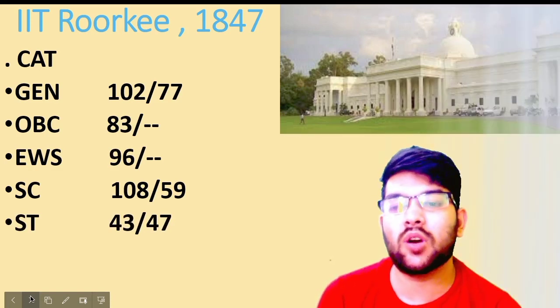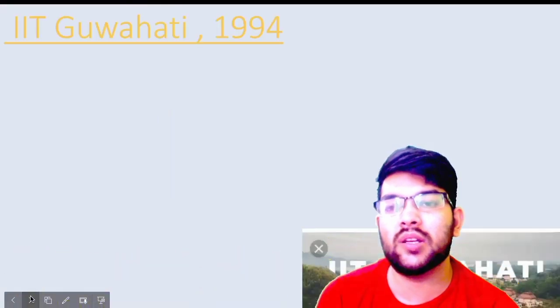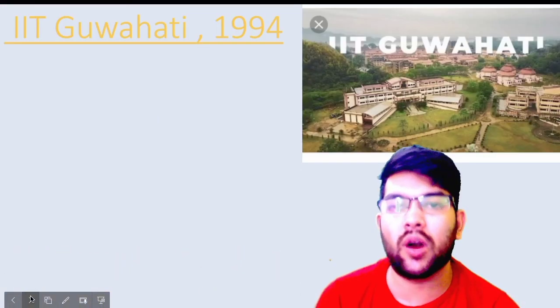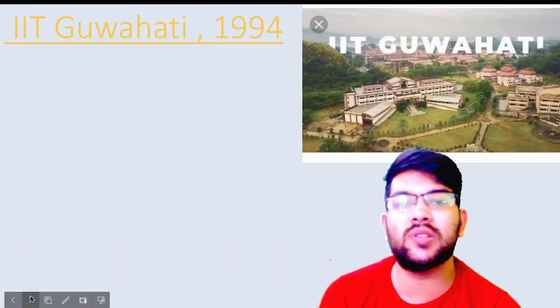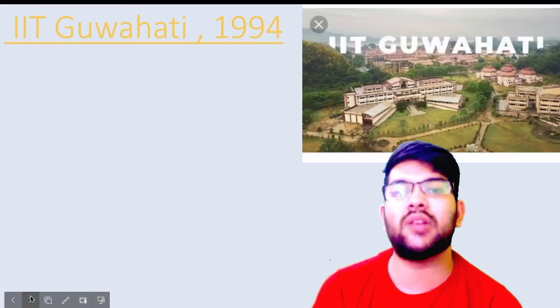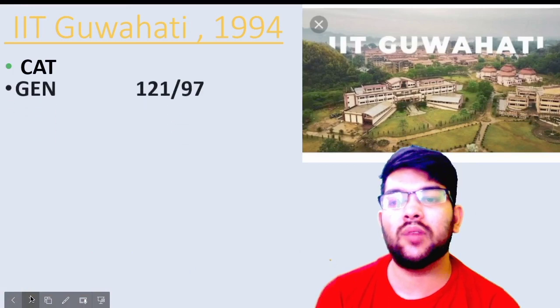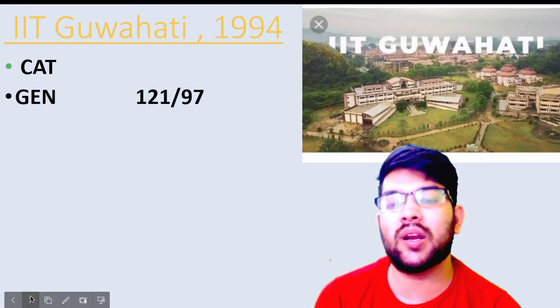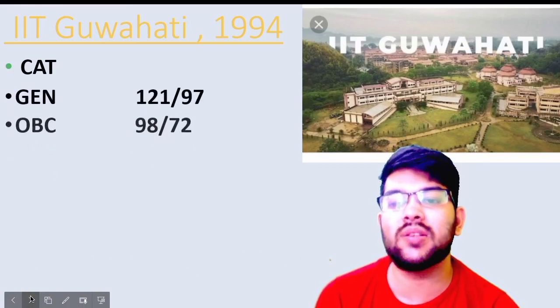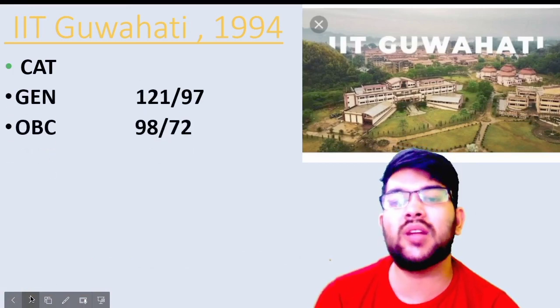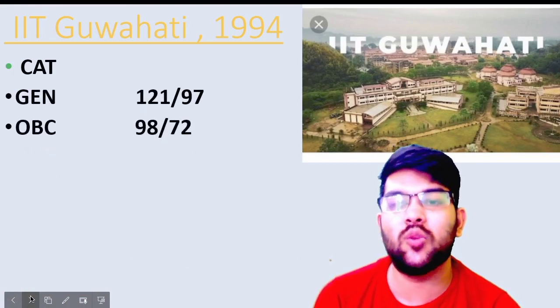Now let's talk about the next one — IIT Guwahati. It was established in 1994. Here is the information: for general category, 121 and 97 marks. For OBC, 98 and 72 marks.